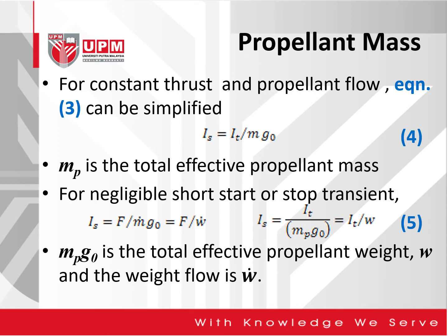The third item is the propellant mass. For constant thrust and propellant flow, equation 3 can be simplified as equation 4, where specific impulse is equal to the total impulse divided by the mass of the propellant times the gravitational acceleration.